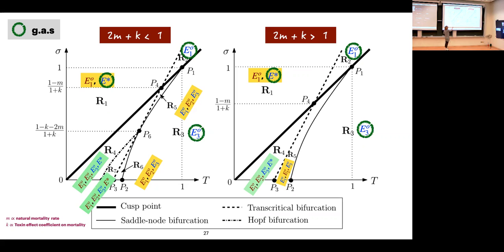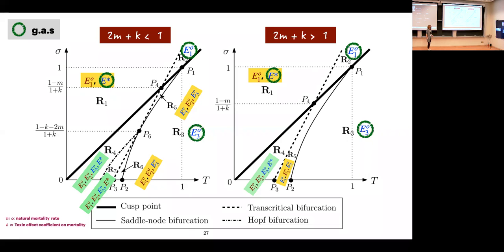Region 7 is not good because E* is unstable. For population persistence, Region 1 is safest. Region 4 is conditionally acceptable, but depends upon initial conditions.